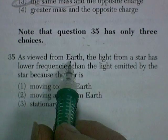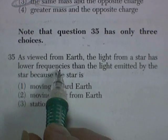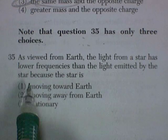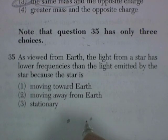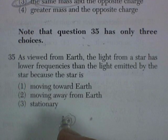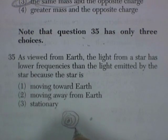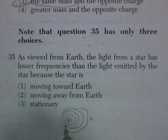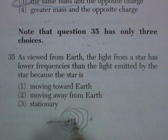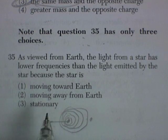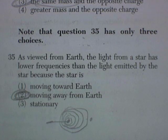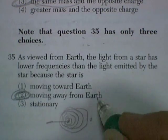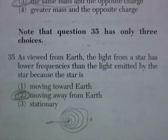Question 35. As viewed from Earth, the light from a star has a lower frequency than the light emitted by the star. So, you're looking at a star, and it's got a lower frequency. And, that's Doppler effect. The light comes off. But, if the star is moving away from the Earth, then we would see a lower frequency as it moves away from us. So, it's moving away from the Earth. It's called redshift. And, we interpret that to mean that all stars are moving away from the Earth.